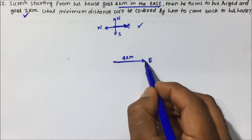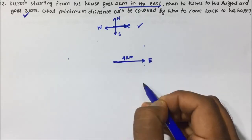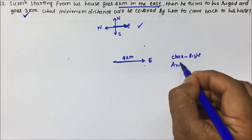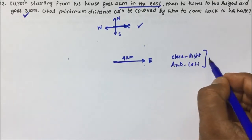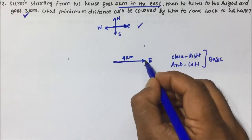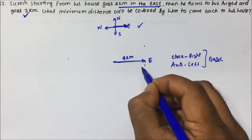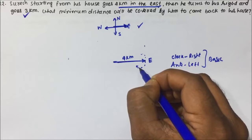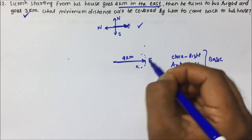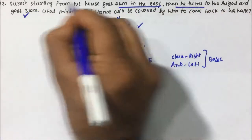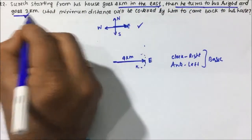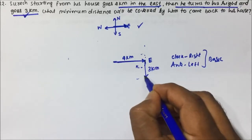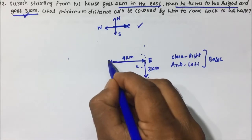To decide the right turn direction: clockwise means right, and anti-clockwise means left. Clockwise is the direction in which the watch's minute hand and second hand move. So put your pen point here — clockwise means right. Suresh takes a right turn and goes 3 kilometers south. So now Suresh is at his final position, having started from his house.